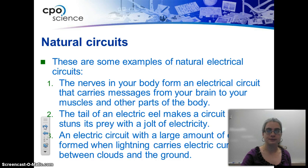You also have natural circuits. Your body, your nervous system actually has nerves that carry electrical currents to different parts of your body. And other natural circuits are, an example would be an electric eel, makes a circuit when it sends its prey with a jolt of electricity. And lightning also creates a current for a short amount of time.